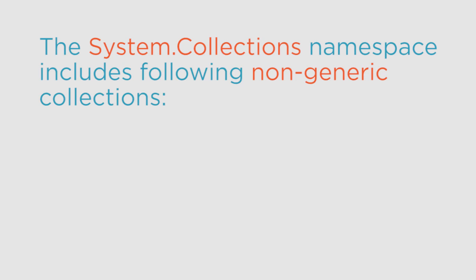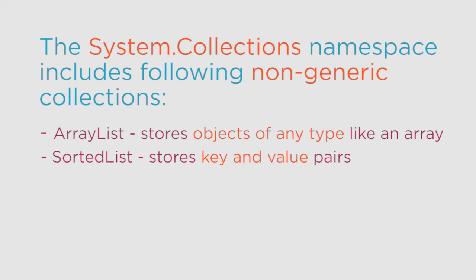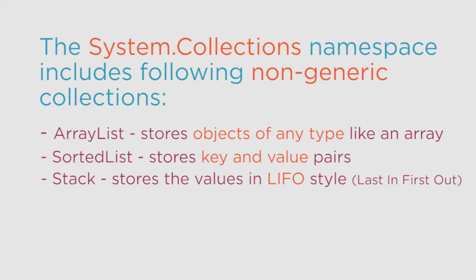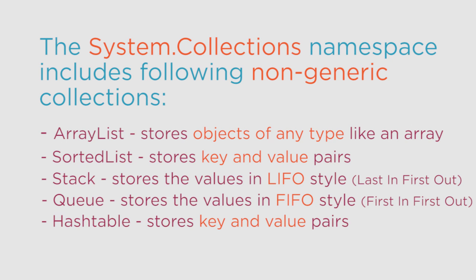Over the next five parts we are going to talk about different non-generic collection types. We'll start with ArrayLists, which are used to store objects of any type like an array. Then we'll learn about SortedLists, which store key and value pairs. Next we'll cover Stacks, which store values in LIFO style — last in, first out. Then Queues, which store values in FIFO style — first in, first out. And finally, HashTables, which also store key and value pairs.